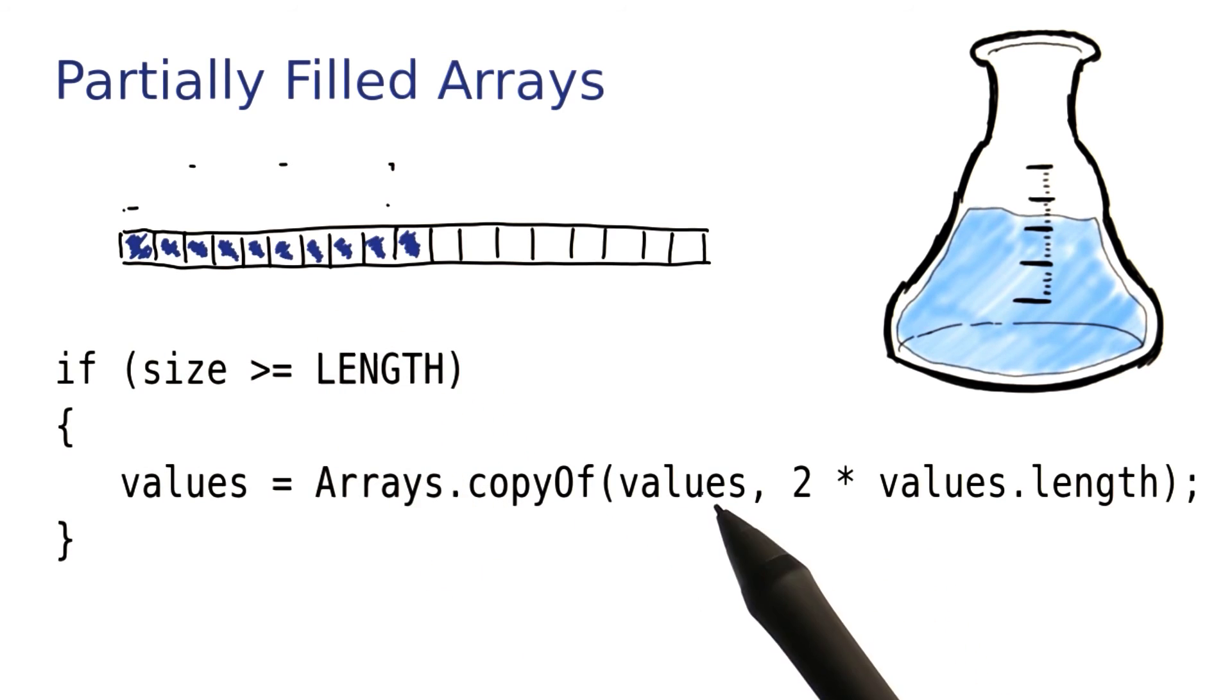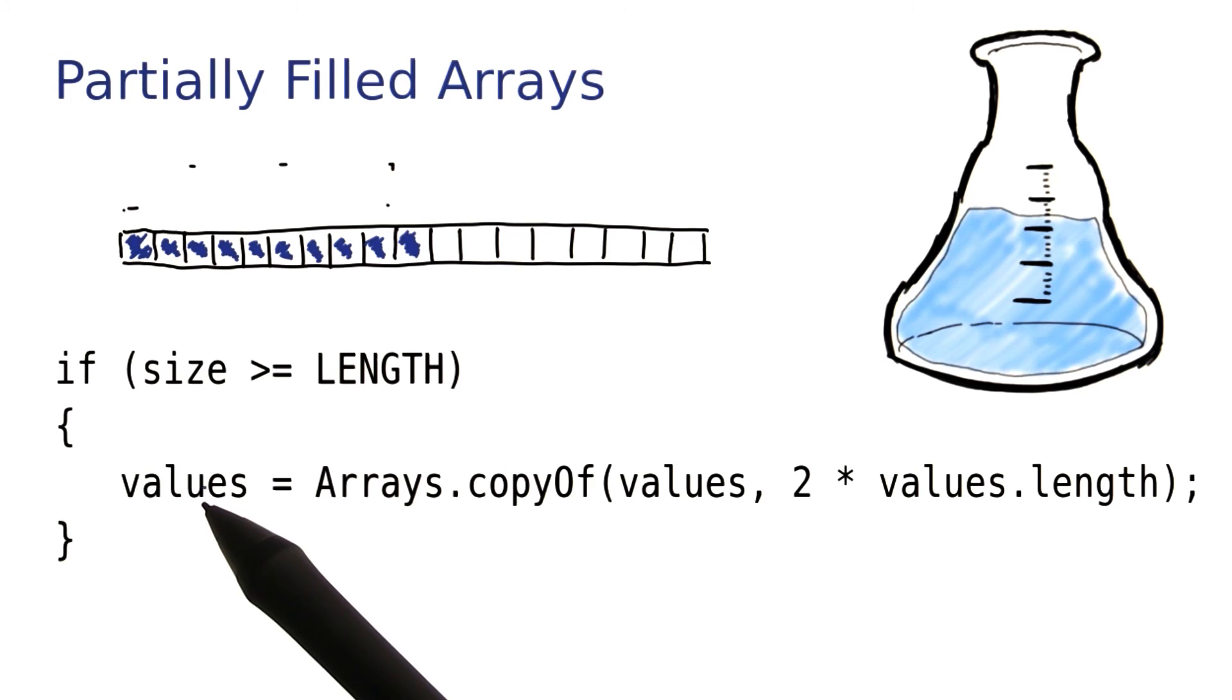The copyOf function takes an array and then the desired length of the larger array. It then makes a larger array and copies the original one in there, returns the larger array, and we just capture it here again.